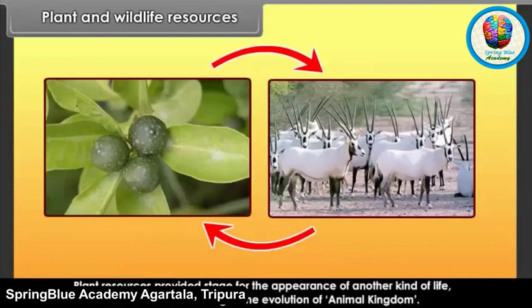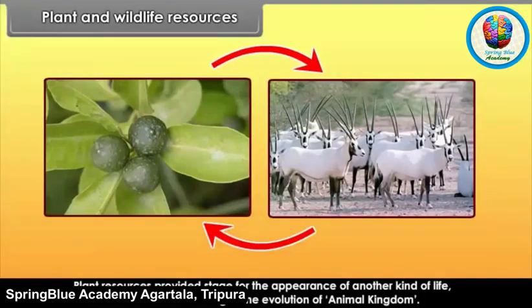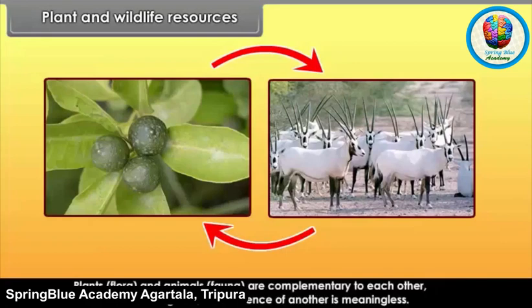Plant resources provided the stage for the appearance of another kind of life in the form of animals, leading to the evolution of animal kingdom. Plants (flora) and animals (fauna) are complementary to each other. Without considering one, the existence of another is meaningless.